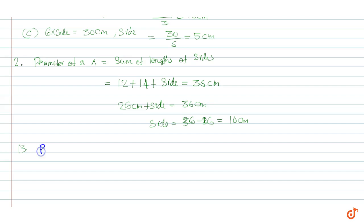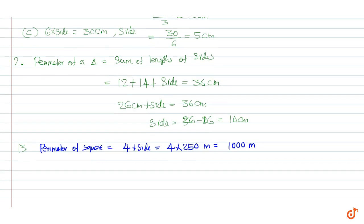Perimeter of a square equals 4 times side. That is equal to 4 times 250, which equals 1000 meters.